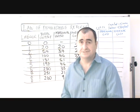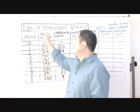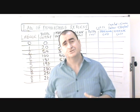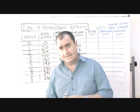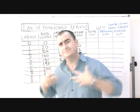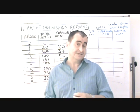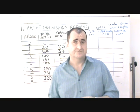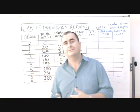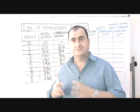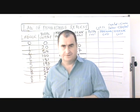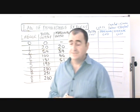The law of diminishing returns is a short-run phenomenon. It only comes into play when one of the factors of production for a business — that's land, labour, or capital — is in fixed supply, a fixed quantity of one of those factors of production.